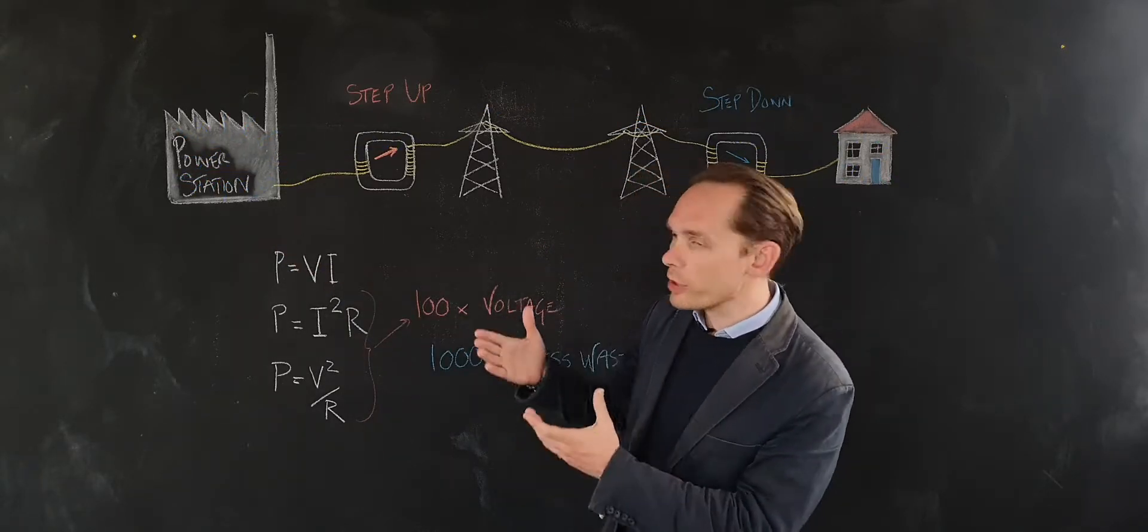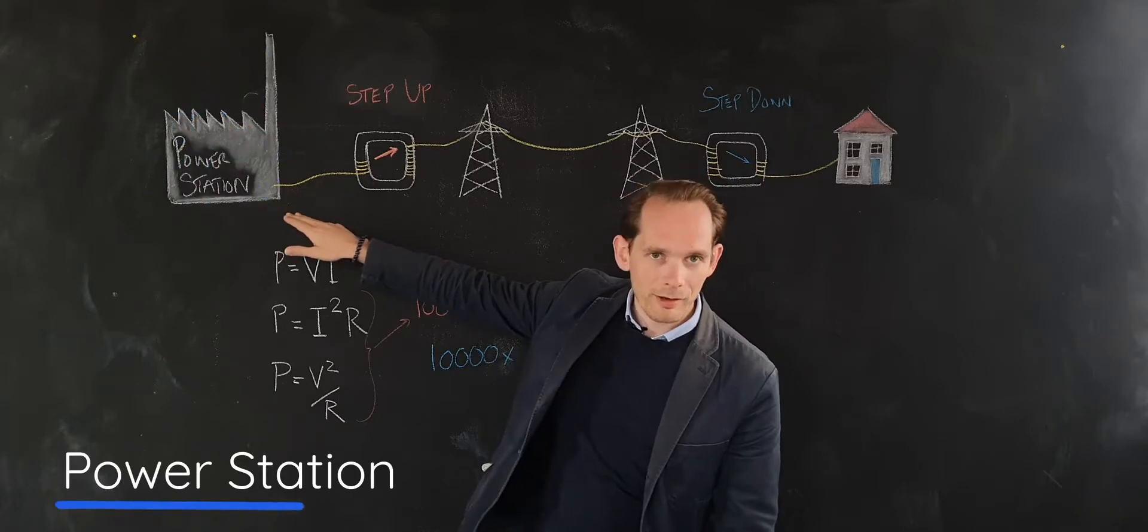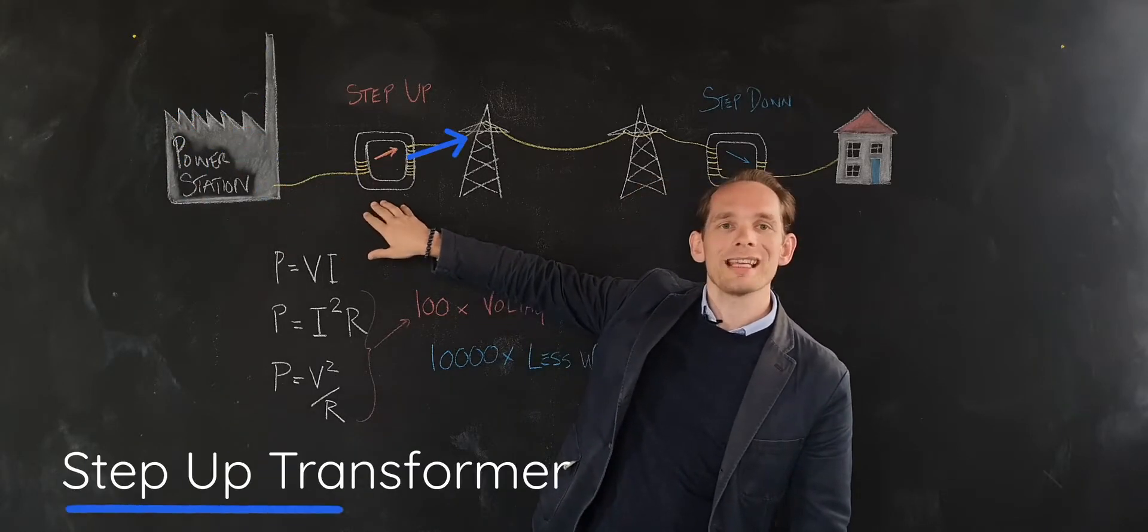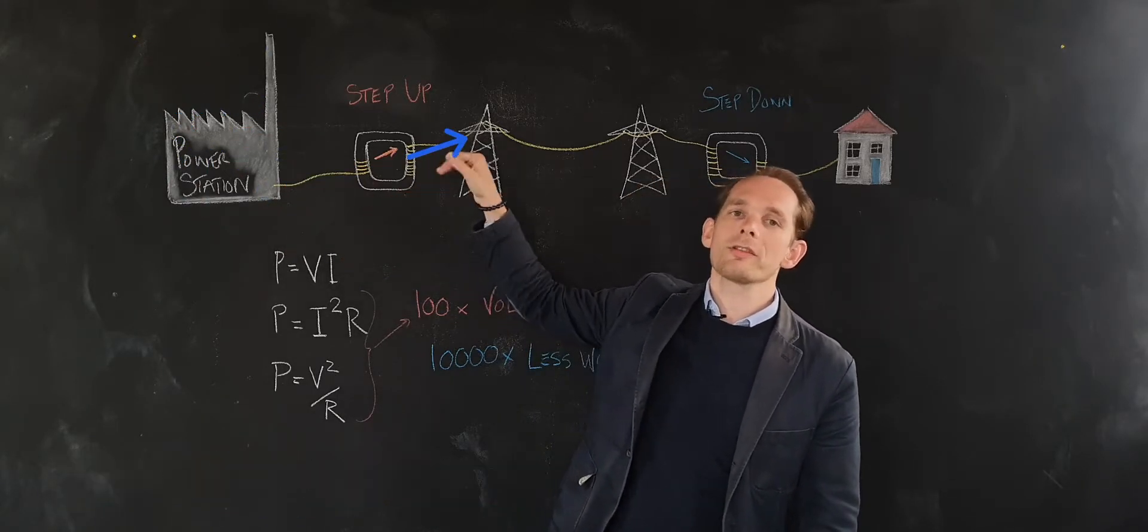First, electricity comes from a power station and goes through a step-up transformer which puts electricity at a very high voltage.